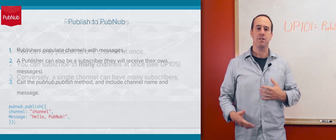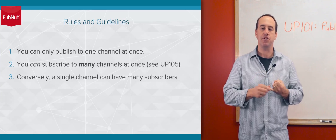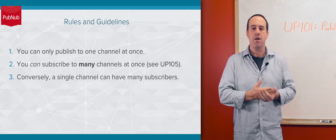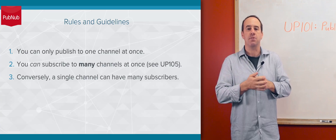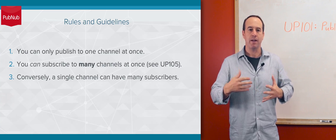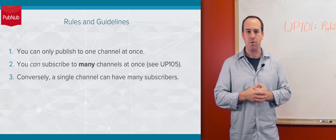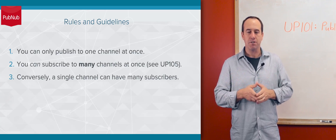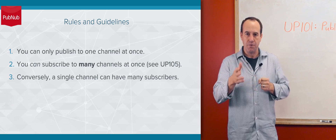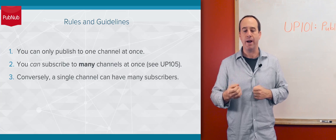When it comes to publishing and subscribing, there are a few rules and guidelines to follow. When you publish, you can only specify a single channel — you can't publish to multiple channels at once. But on the subscribe side, you can actually subscribe to multiple channels. It's called multiplexing, and we have different mechanisms for subscribing to many channels, which we'll cover in the Stream Controller course. In this example, we're just publishing to one channel and subscribing to a single channel, but you can subscribe to many channels and receive them all in the same callback function.